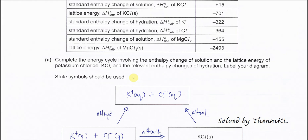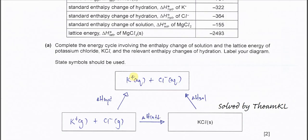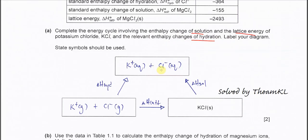Part A: complete the energy cycle involving the enthalpy change of solution, lattice energy, and hydration enthalpy. First, we start with lattice energy. To form the KCl solid, we use the gaseous ions — gaseous ion of potassium and gaseous ion of chloride. After they combine, they form the solid. The enthalpy involved is the lattice energy.